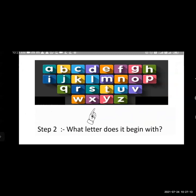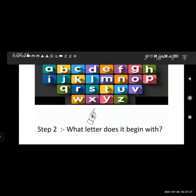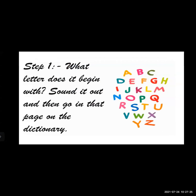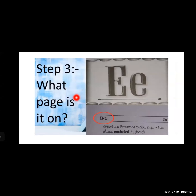The very first step is to find out the letter from which the word begins. Sound it out, and then go to that page of the dictionary. You need to pronounce the word first — like 'encourage'. The word 'encourage' starts with E. So first find out the sound, then identify what letter it begins with. It begins with the letter E. Then go to the page for E.